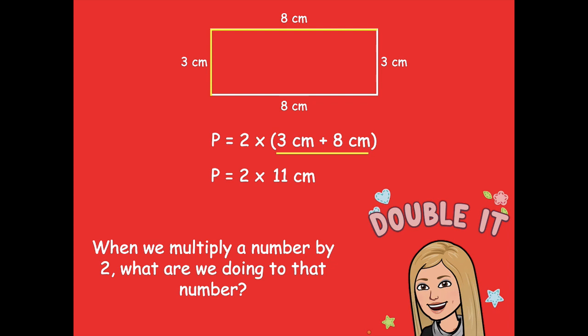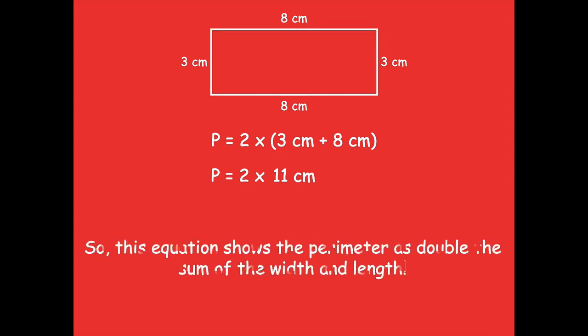This equation actually does represent the perimeter of our rectangle. If we add 3 plus 8 we get 11, and when we multiply that by 2 we're getting the other two sides — because opposite sides are equal in a rectangle. This equation shows the perimeter as double the sum of the width and the length. Let's check it: 2 times 11 centimeters equals 22 centimeters. If we add all side lengths: 8 plus 8 is 16, plus 3 plus 3 is 6, so 16 plus 6 equals 22. This doubling strategy is really going to help us today.